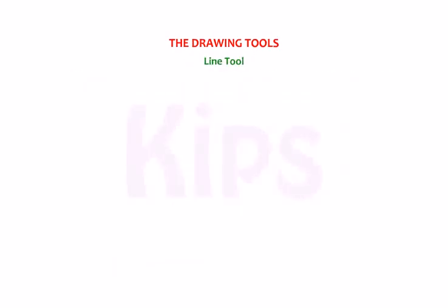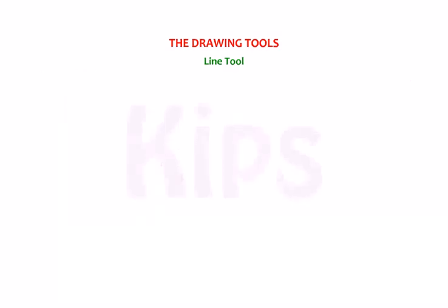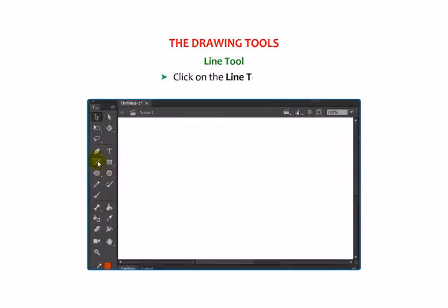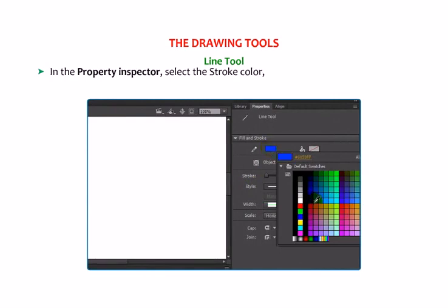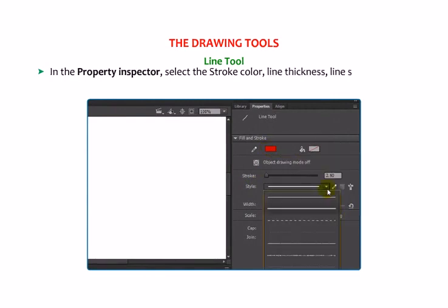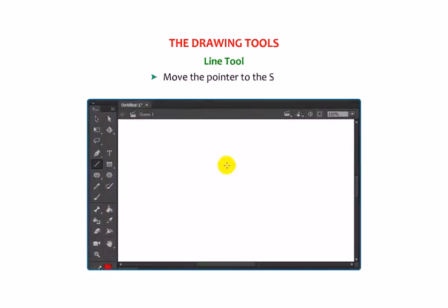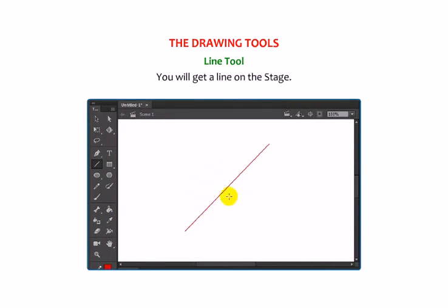Now let's find out about the Line Tool. The Line Tool works exactly the same way as the Line Tool in any graphics software. We can use the Line Tool to draw straight lines. Click on the Line Tool. In the Property Inspector, select the Stroke Color, Line Thickness, Line Style or Width Profile as needed. Move the pointer to the stage, click and drag it in the direction where you want to draw a line, then release the mouse button. You will get a line on the stage.